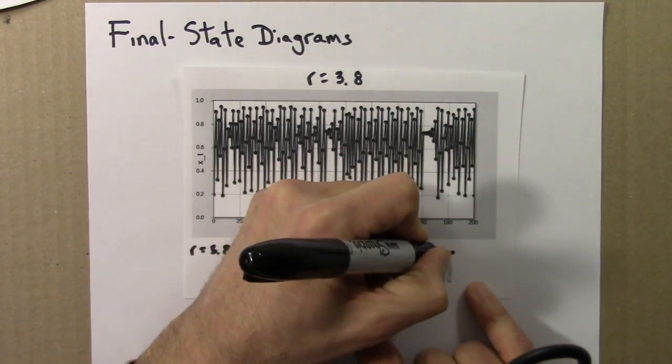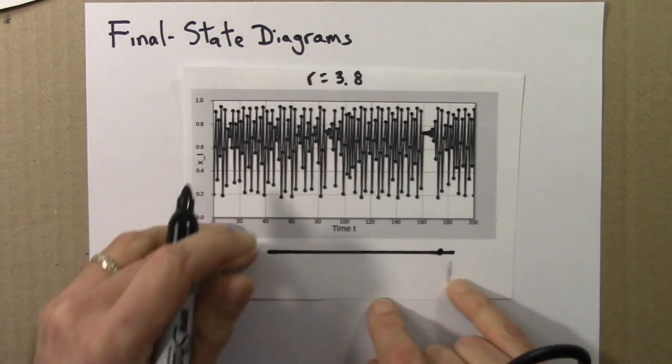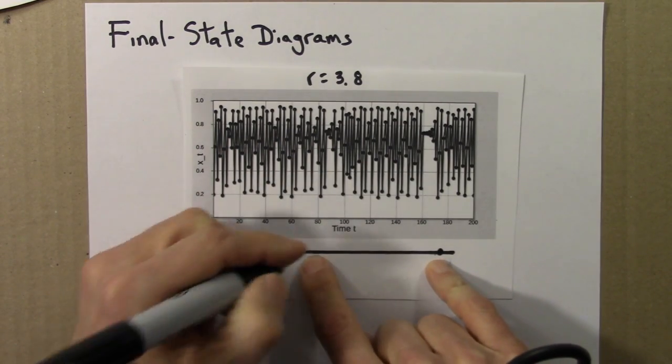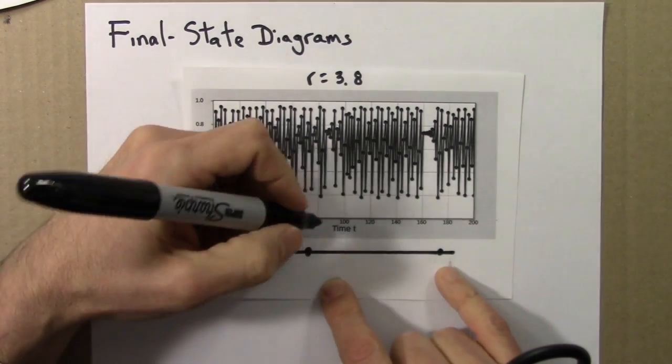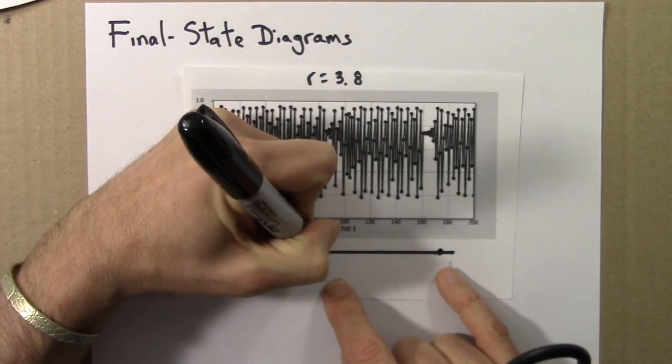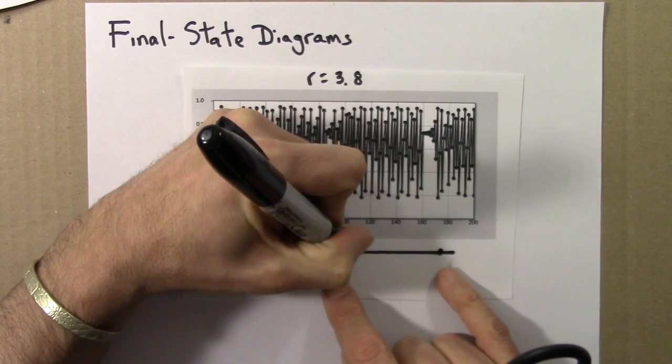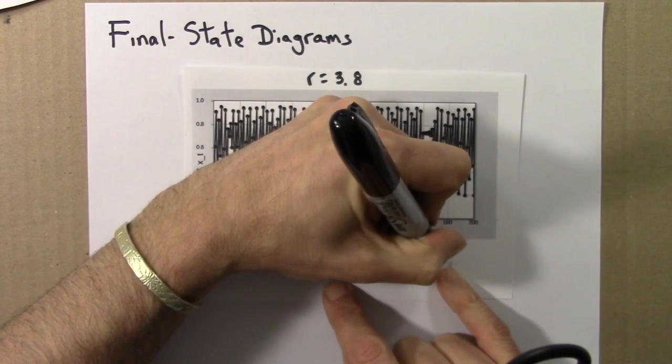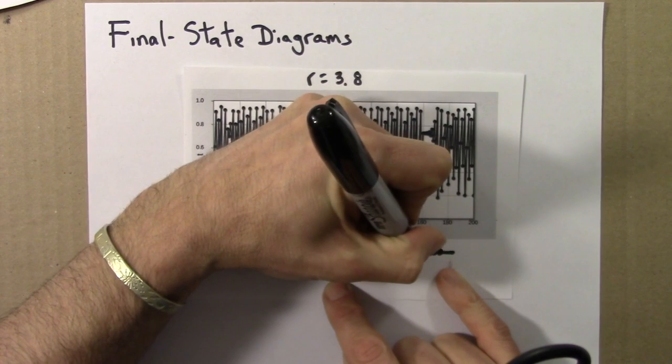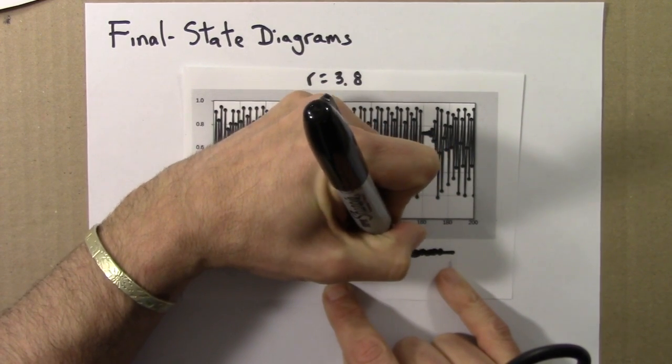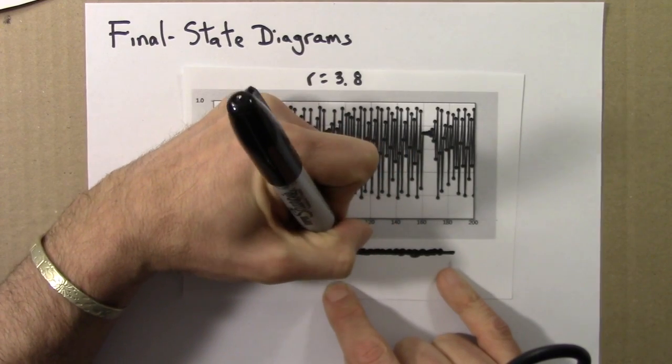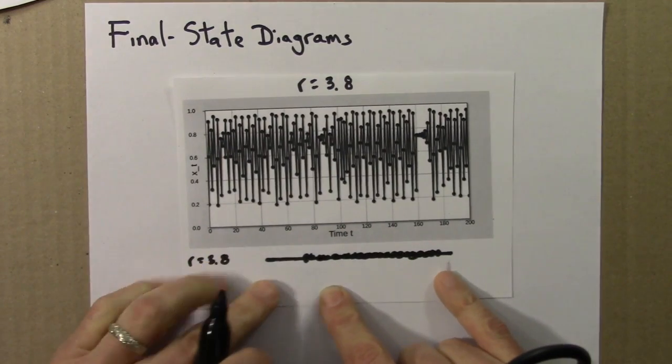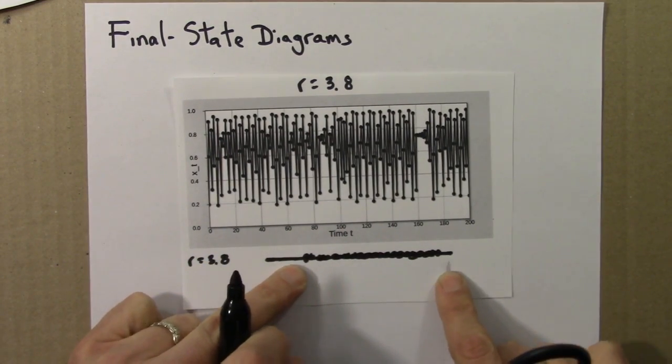The largest value is going to be about over here. The smallest value, 0.18. Maybe that's around here. And then I would just fill this segment up with dots. Filling it up with dots. Okay, so the final state diagram might look something like this.